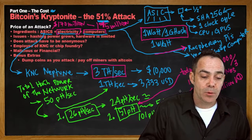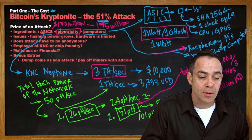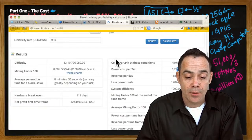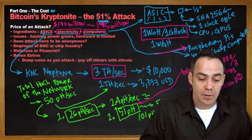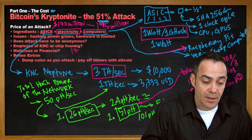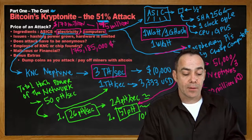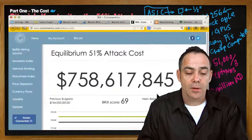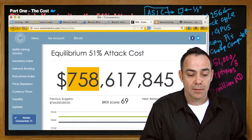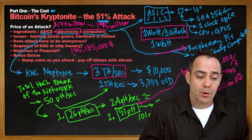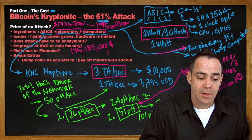So if we wanted to run a 51% attack today, we have a pretty good price: $170 million for the ASICs, $5 million for the computers, and electricity at $183,000 per day — let us call it $185,000. Our total price is approximately $175,185,000. Contrary to what we saw on coinmetrics.com showing $758 million, the calculated cost of running a 51% attack is closer to $175–176 million.